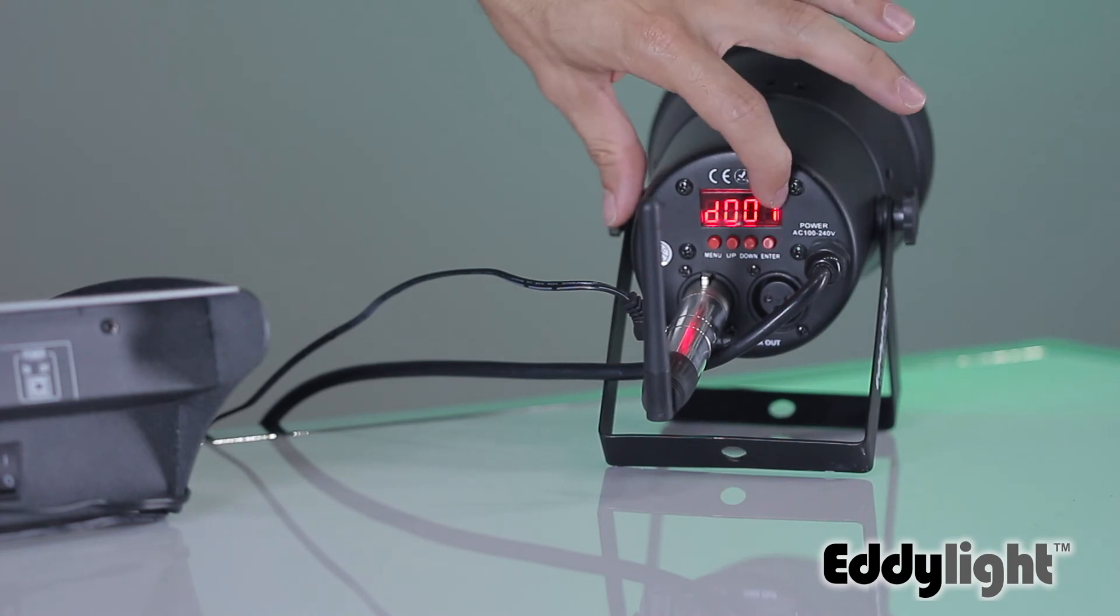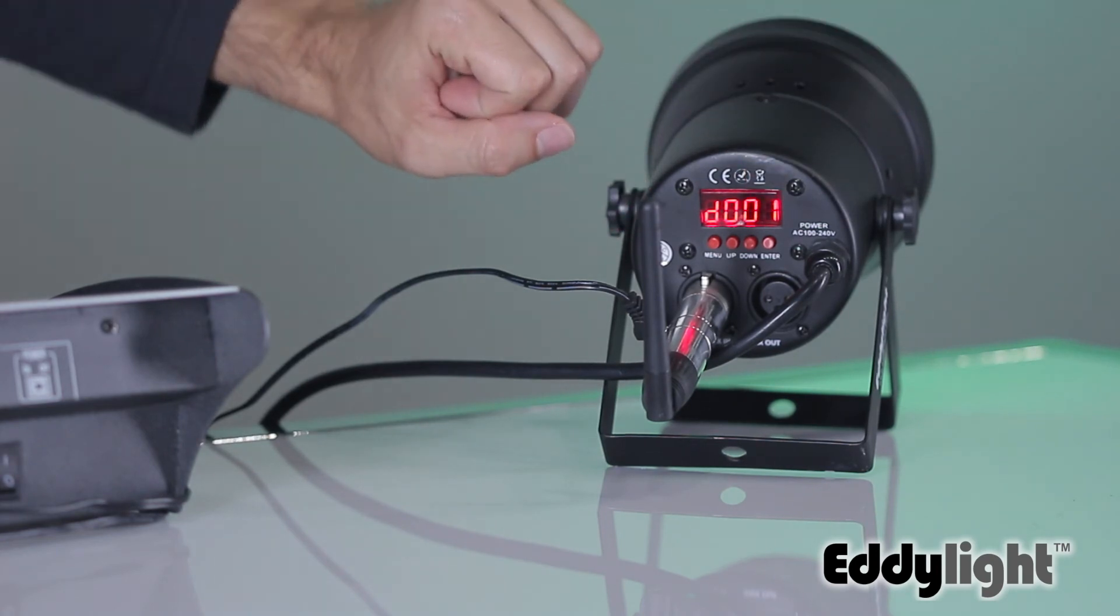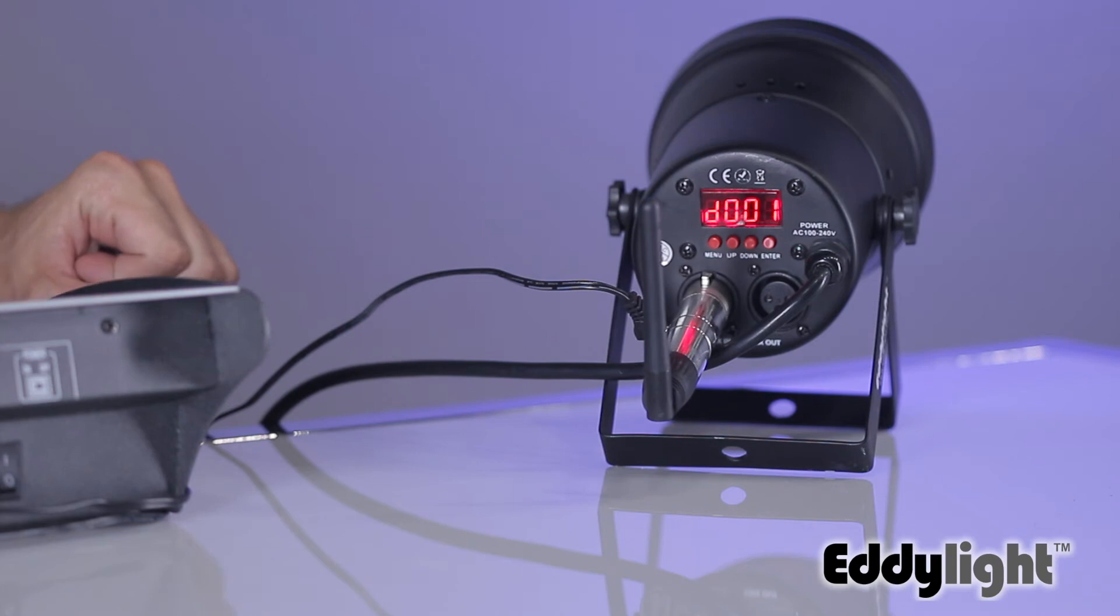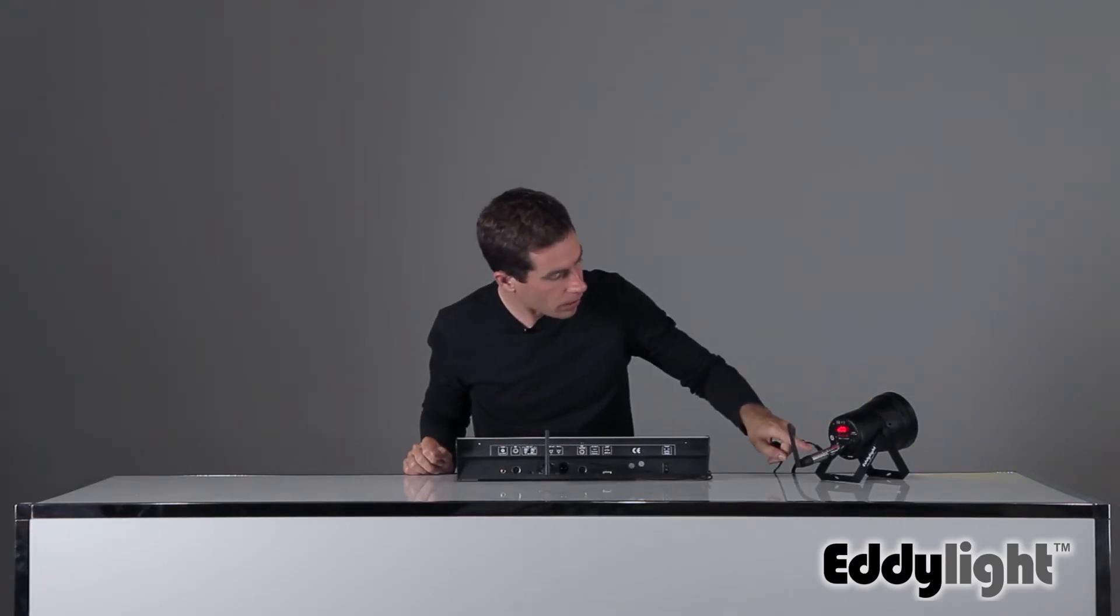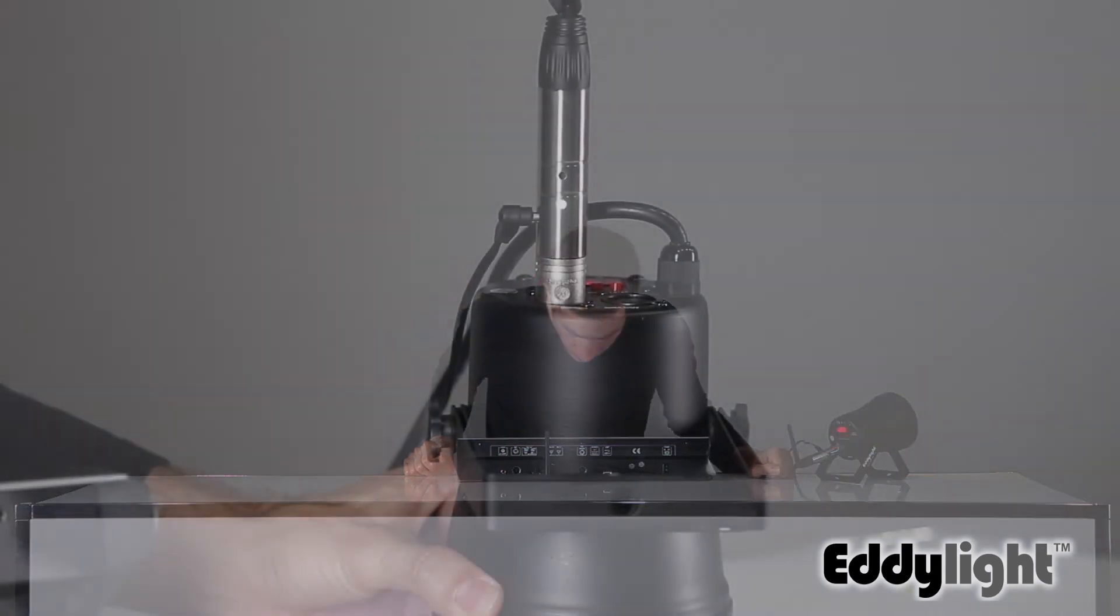And by default, we're going to use address 001. Once I have it set to D001, the light now flashes green, indicating that it's connected.